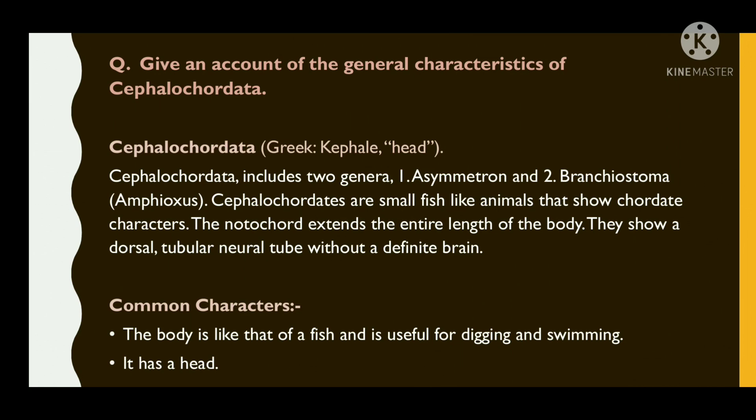In cephalochordata, 'cephalo' is a Greek word which means head, and 'chordata' is a Latin word which means chords. Cephalochordates include two genera: Asymmetron and Branchiostoma. Cephalochordates are small fish-like animals that show chordate characters.